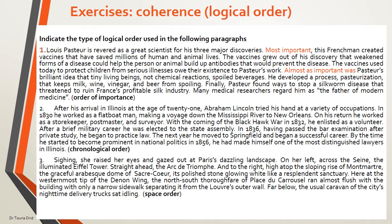We take the third paragraph. Sighing, she raised her eyes and gazed out at Paris's dazzling landscape. We understand from this topic sentence that a picture is going to be described — the picture of Paris's dazzling landscape. On her left, across the Seine, the illuminated Eiffel Tower. We see a description of a place with the expression 'on her left.'